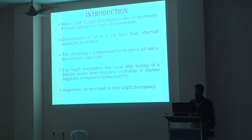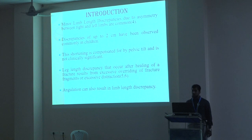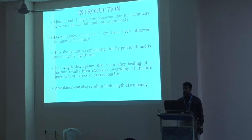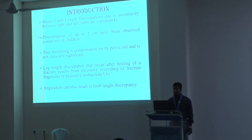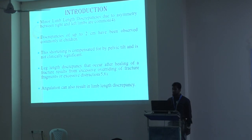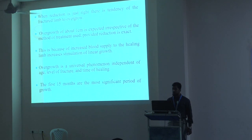A discrepancy of up to 2 cm has been observed commonly in children. This discrepancy is compensated by pelvic tilt and is not clinically significant. Altered fracture healing resulting from excessive overriding, entrapment, or excessive distraction can cause limb length discrepancy. Angulation can also result in shortening.